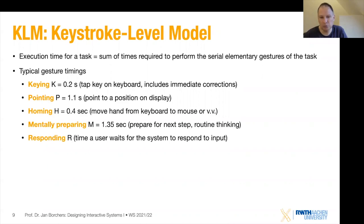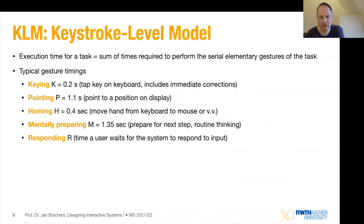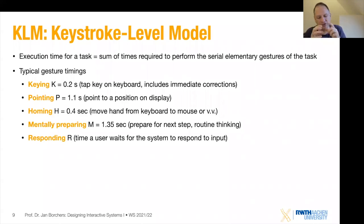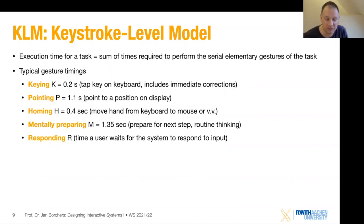Pointing — moving to a target on screen with a mouse — takes on average 1.1 seconds. This averages over all possible Fitts' Law pointing tasks on a screen, and the target size is assumed to be about the size of a character. If you had to hit a single pixel, it would take longer. Homing — moving your hand from keyboard to mouse or vice versa — takes 0.4 seconds. This is an important one we often ignore.